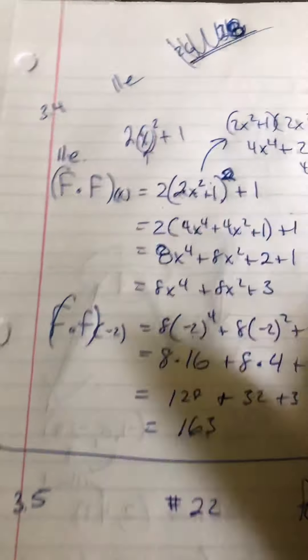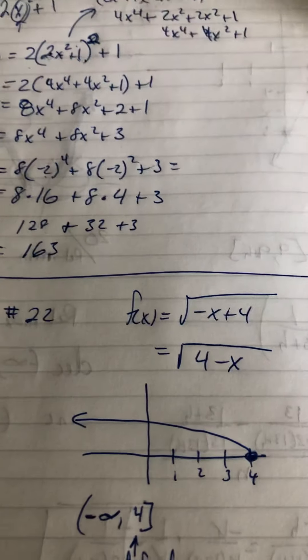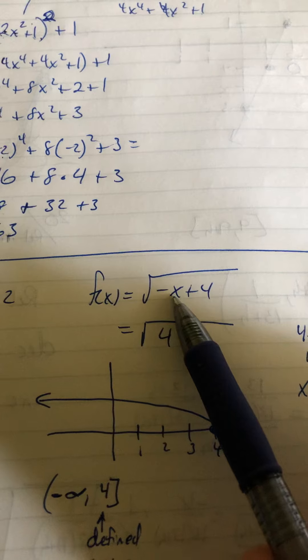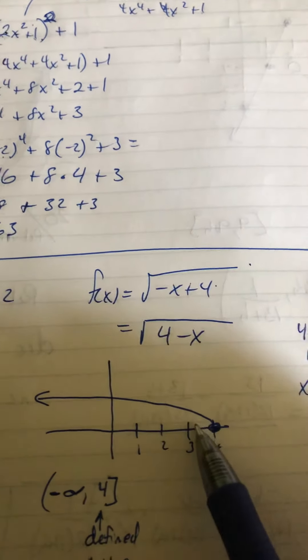Okay. Now, section 3.5, number 22 is asking where is this function decreasing or increasing? Its function is negative the square root... I'm sorry, negative x plus 4, the square root of all of that.